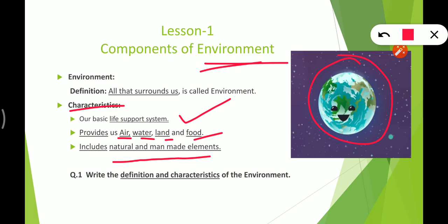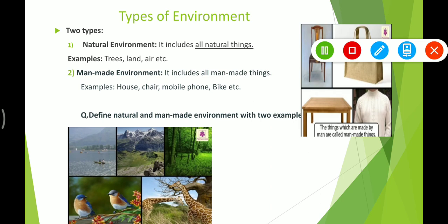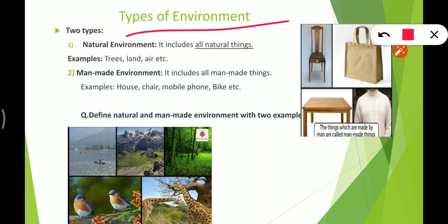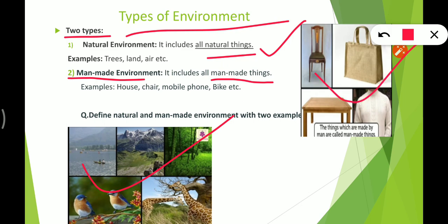This picture is our mother earth. When we talk about types of environment, there are two types: man-made environment and natural environment. This picture shows the natural environment, and this video shows man-made environment. So let's move on.